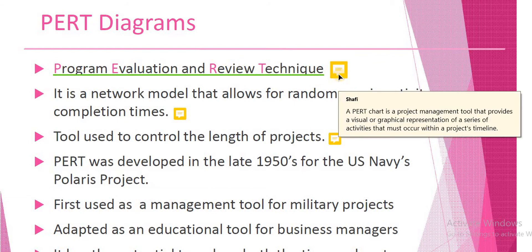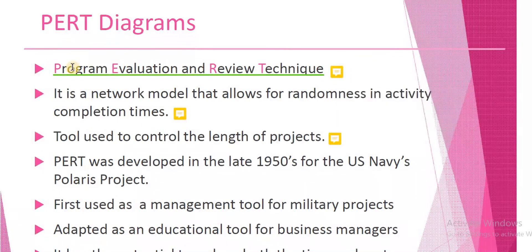So what is a PERT diagram? A PERT diagram or PERT chart is a project management tool that provides a visual or graphical representation of a series of activities that must occur within a project's timeline. It is a series of activities graphically or visually represented using this PERT diagram.